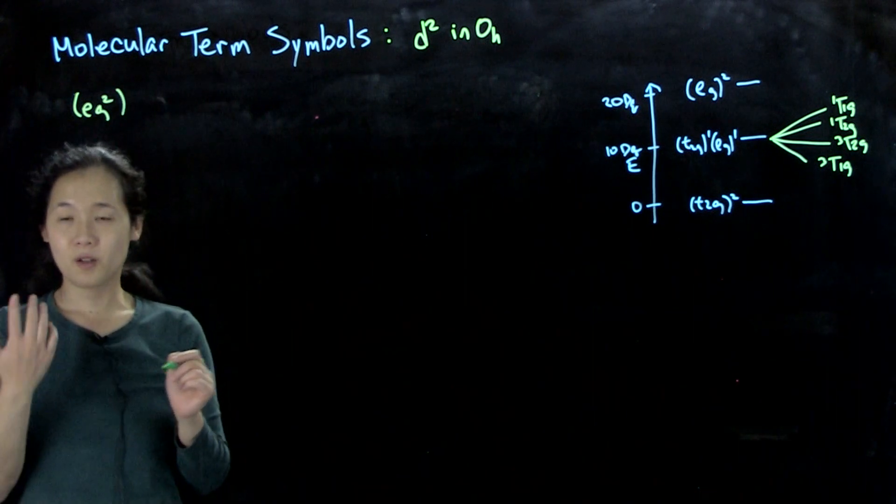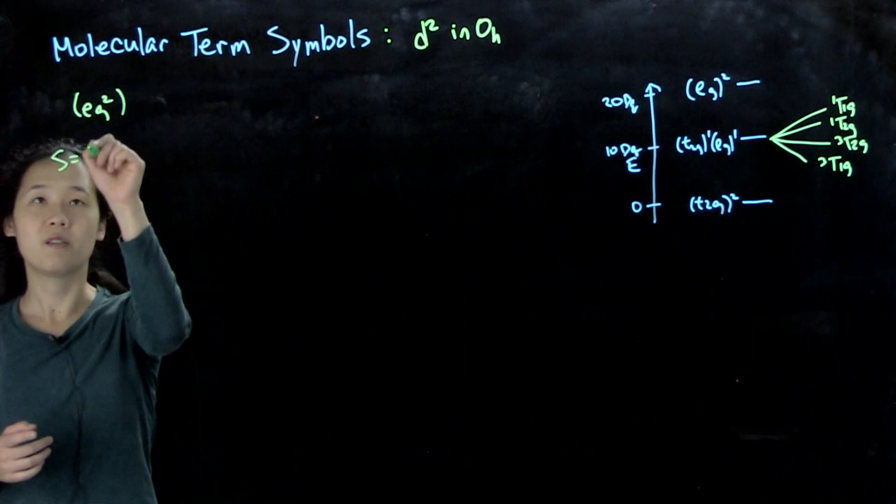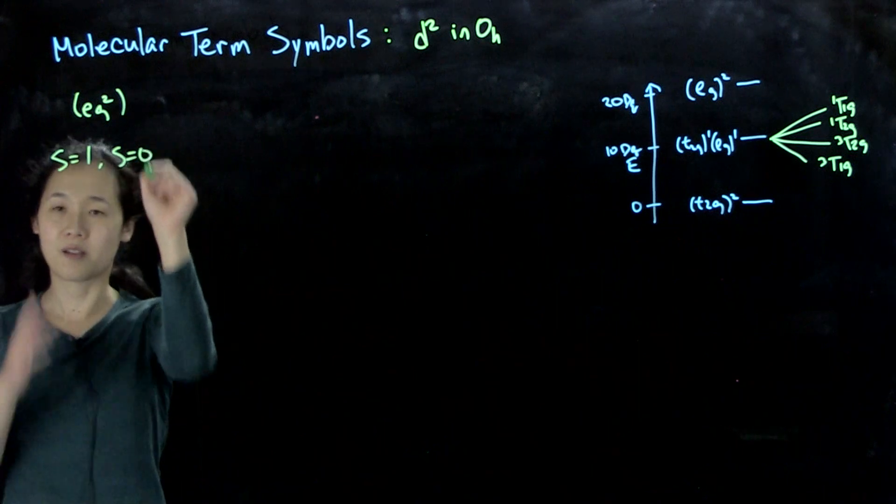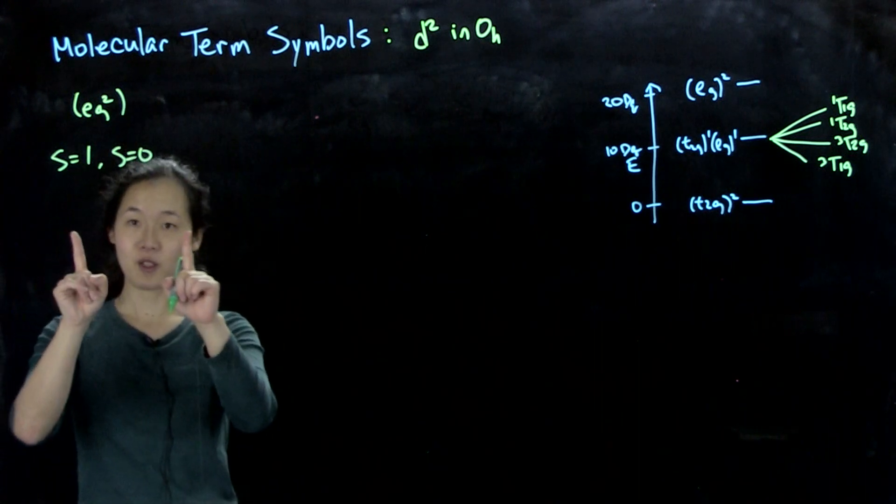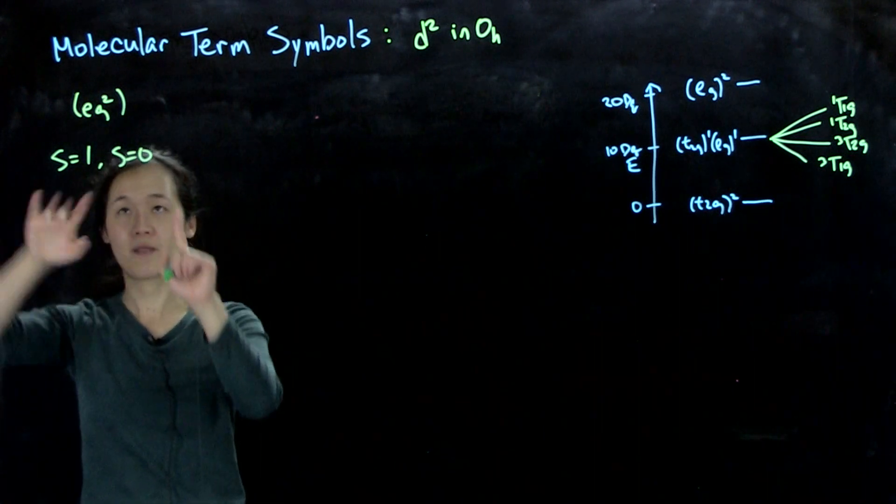OK, so again with our two electrons we can have s equals 1 or s equals 0. That's great, right? Again, two electrons, we can have them both spin up or we can have them paired. That's simple enough.